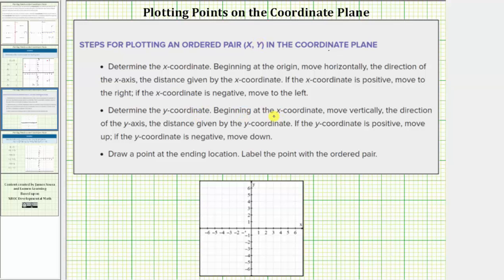Then beginning at the x coordinate, we move vertically the direction of the y axis, the distance given by the y coordinate. If the y coordinate is positive, we move up. If the y coordinate is negative, we move down. And then finally we graph a point at the ending location.